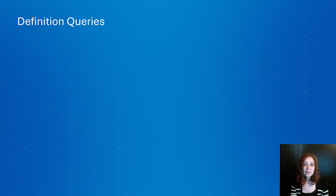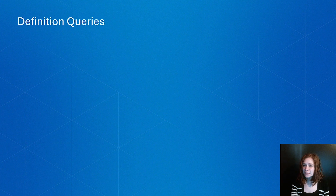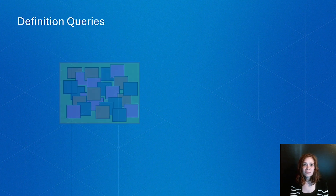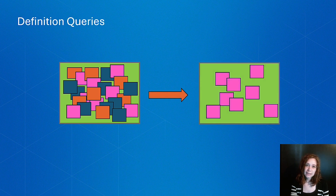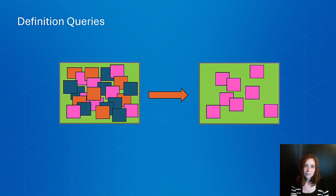Definition queries are different in that they do impact what we see without having to delete anything. This works really well when you have busy data and would like to filter your view based off of a specific criteria. Like selection queries, you can choose to process this subset of information in your geoprocessing tools.